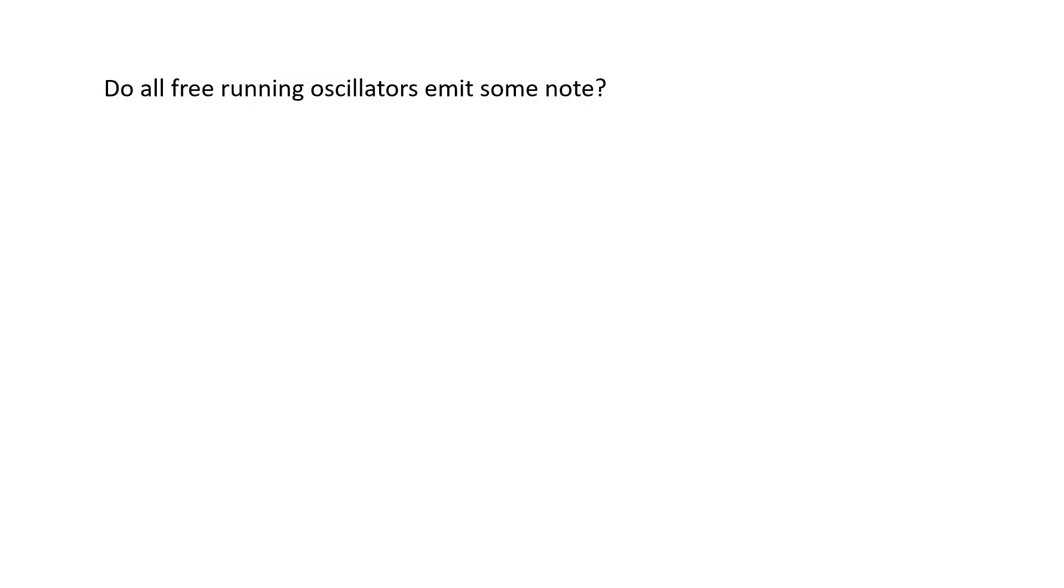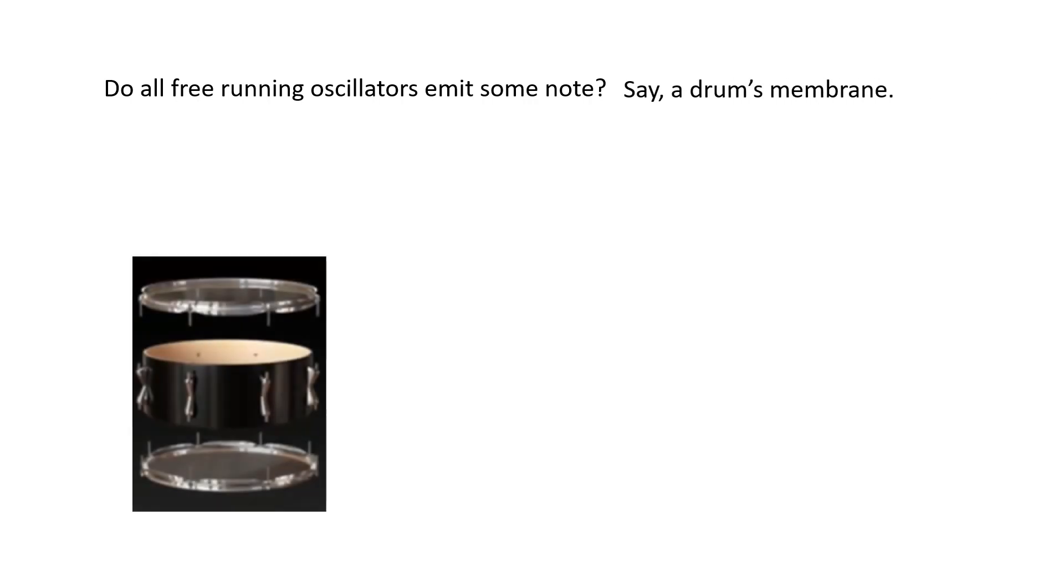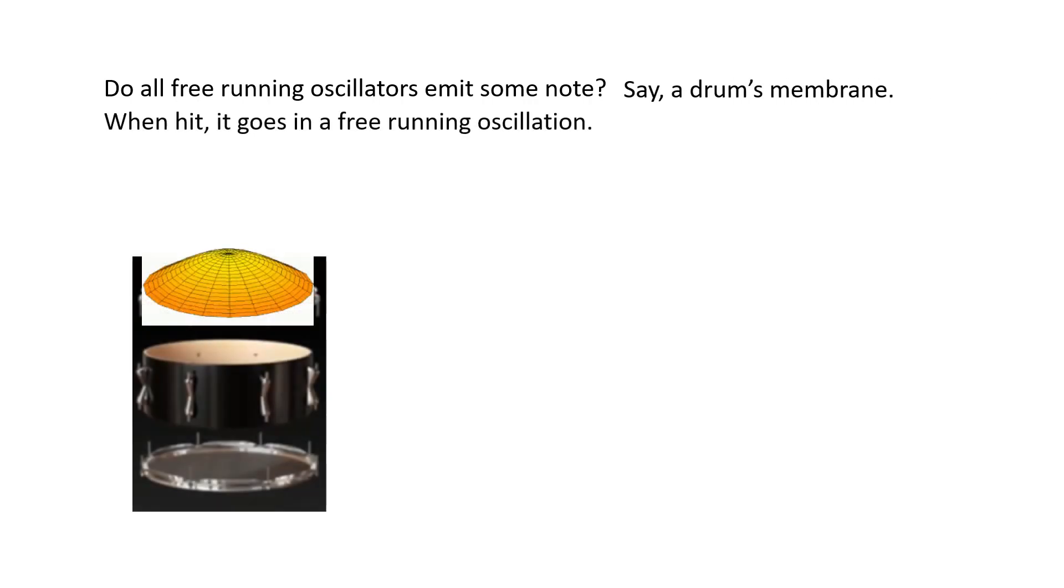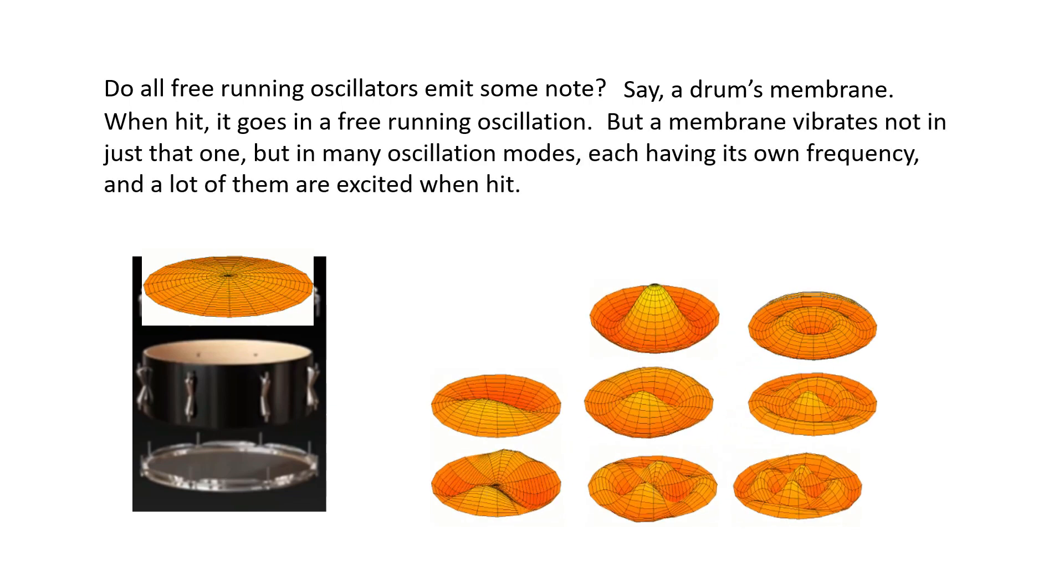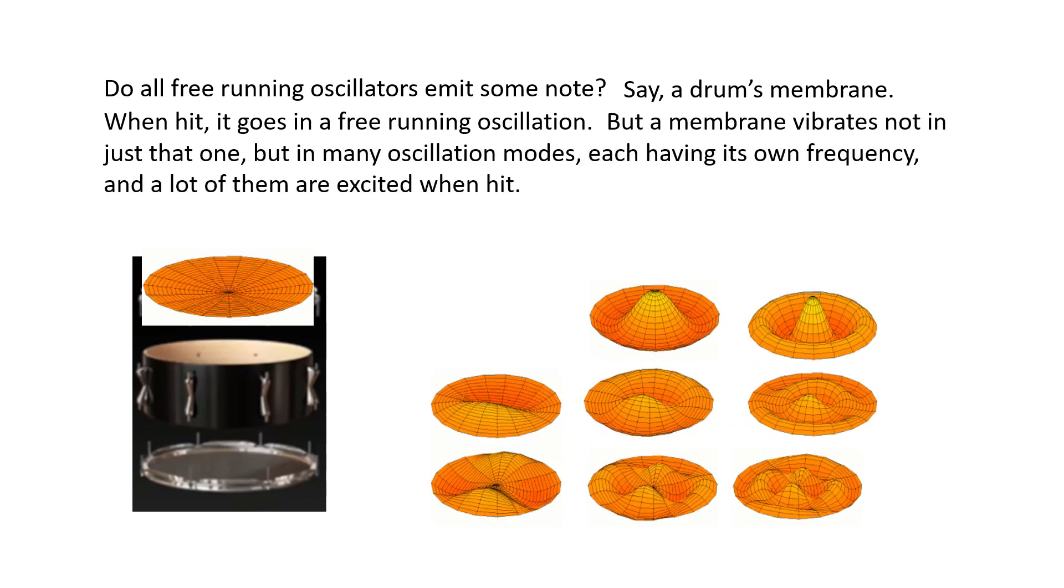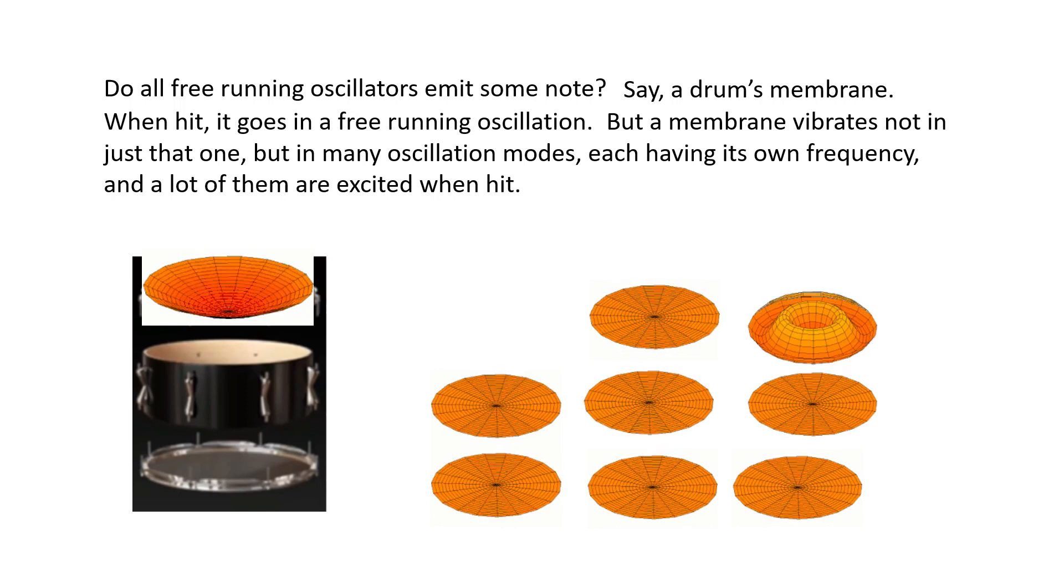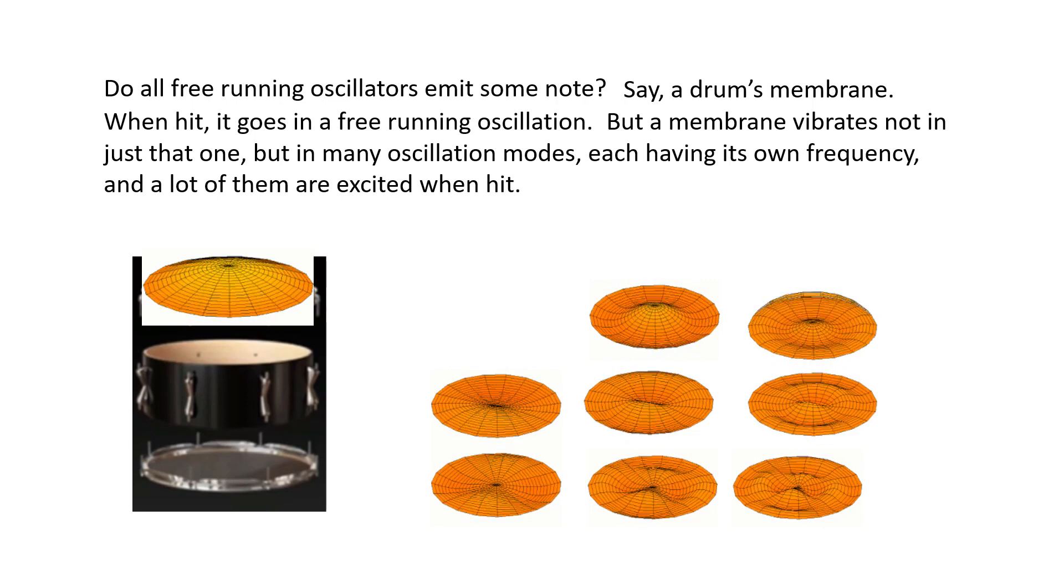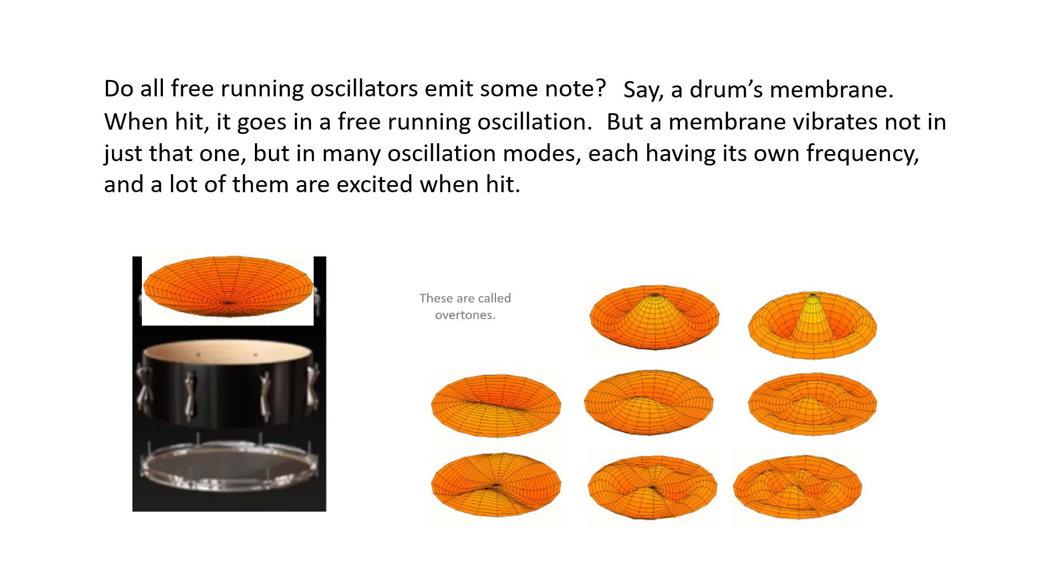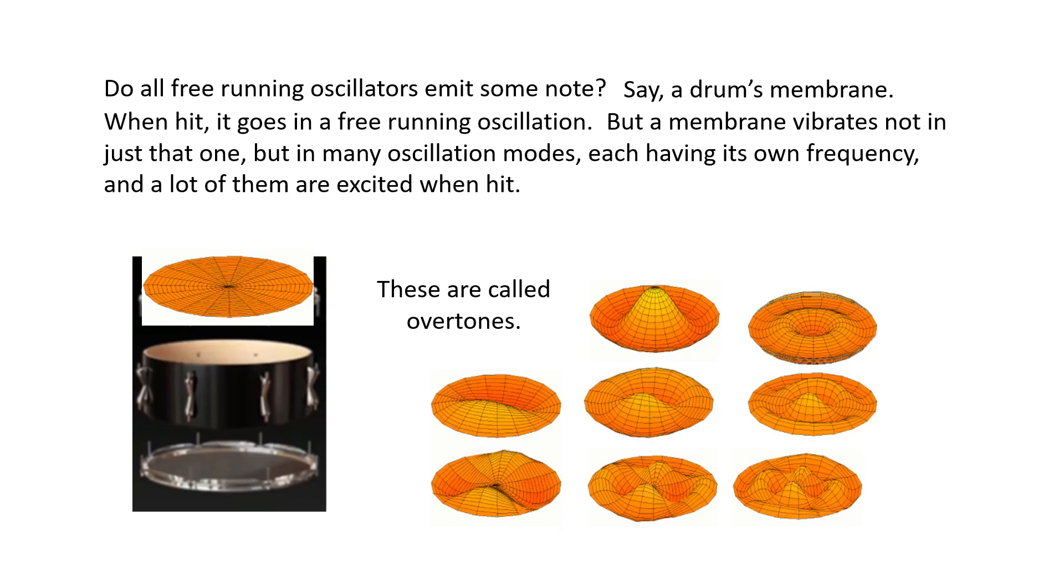Do all free running oscillations emit some notes? Say a drum's membrane when hit, it goes in a free running oscillation. But a membrane vibrates not just in one but in many oscillation modes, each having its own frequency. And a lot of them are excited when hit. These are called overtones.